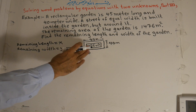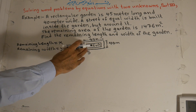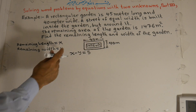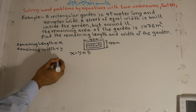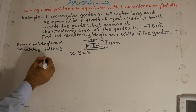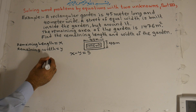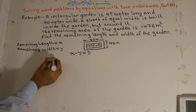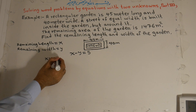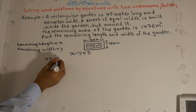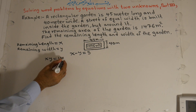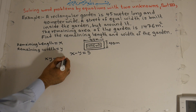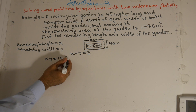And now we know that x times y — that is, x·y — is equal to the area, which is 1476 square meters.